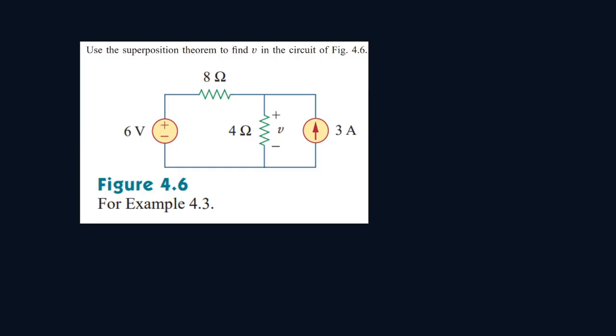Superposition, you pretty much turn off one source and keep another source on. And it has to be independent sources. Dependent sources don't count. You can't turn those off, but you can turn off independent sources.